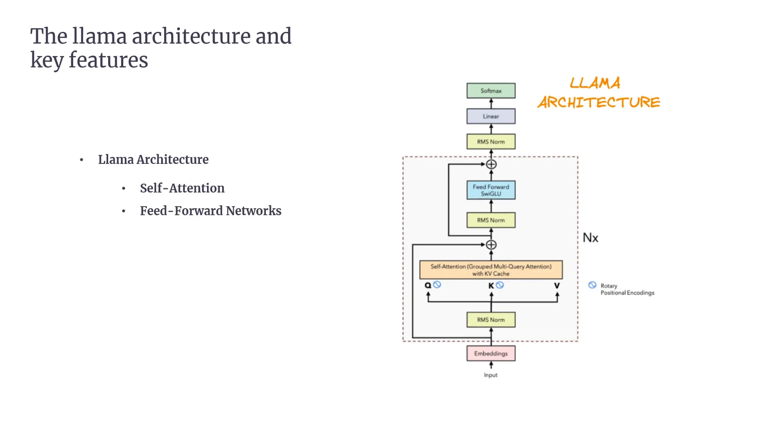Feed-forward networks. After self-attention, the model uses feed-forward networks to apply non-linear transformations to each token's representation, helping it learn more complex features. In the feed-forward layers, LLAMA uses the SwiGLU activation function instead of the standard ReLU. SwiGLU, introduced in the paper GLU Variants Improve Transformer, has shown better performance in terms of learning efficiency and model accuracy.